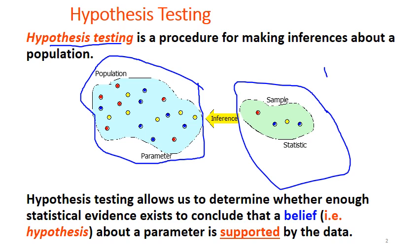Whatever hypothesis that you hypothesize from this sample, you use statistics to gather enough evidence and support so that this hypothesis can then be inferred or generalized to the population of interest. That means that hypothesis testing allows us to determine whether enough statistical evidence exists to conclude that a belief, a hypothesis, or statement about a parameter - it could be a mean, a difference, a correlation - is supported by the data.